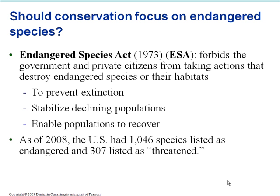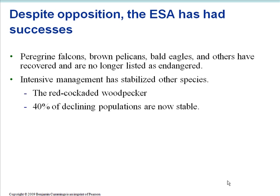So how do we conserve species? There are a number of different policies, and probably the most prominent one in the U.S. is the Endangered Species Act. It's currently the primary legislation for protecting biodiversity in the U.S. It was first signed into law in 1973 and has been updated many times since. It forbids the government and private citizens from taking actions that destroy endangered species or their habitats. As of 2008, the U.S. had 1,046 species listed as endangered and 307 listed as threatened. Despite opposition, the ESA has had success.